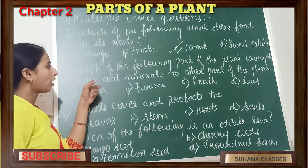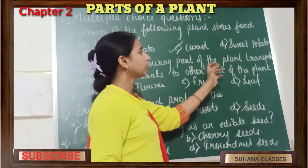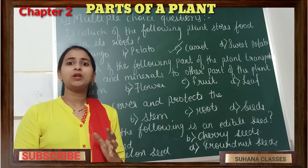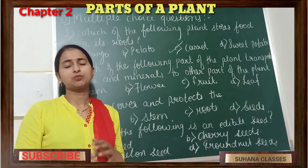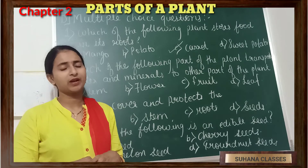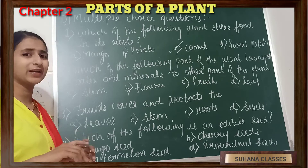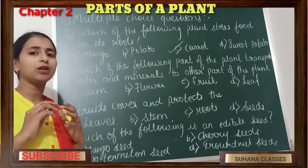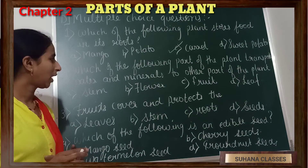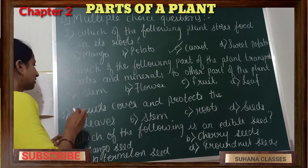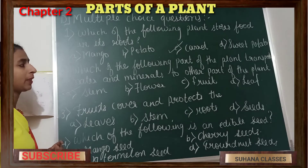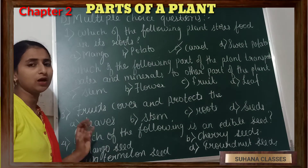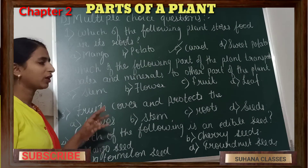Next question: which part of a plant transports water and minerals to the other parts of the plant? We have studied that roots absorb water and minerals, and the stem transports water and minerals to the whole plant. So the correct option is stem. Flowers, fruits, and leaves do not do the work of transporting — only the stem does.